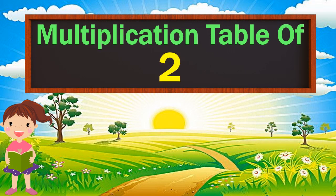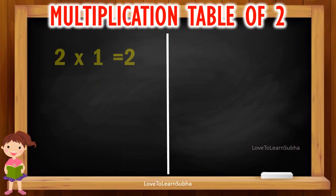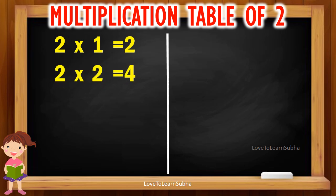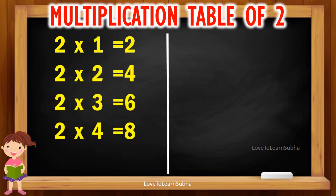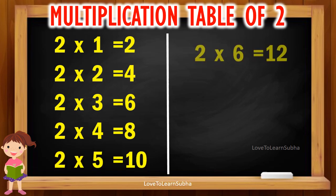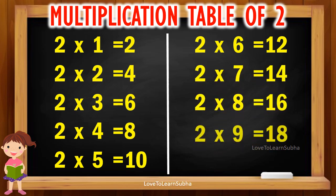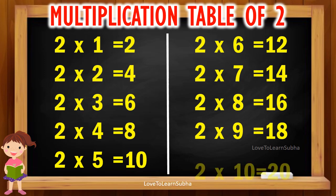Multiplication table of 2. 2 1s are 2, 2 2s are 4, 2 3s are 6, 2 4s are 8, 2 5s are 10, 2 6s are 12, 2 7s are 14, 2 8s are 16, 2 9s are 18, 2 10s are 20.